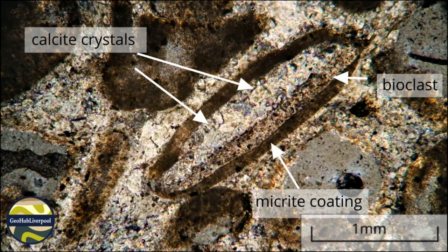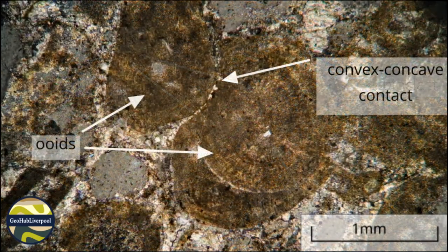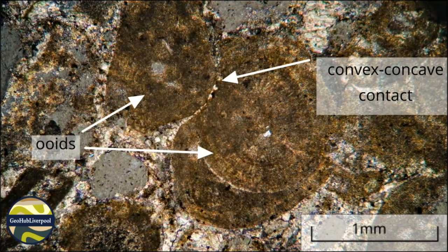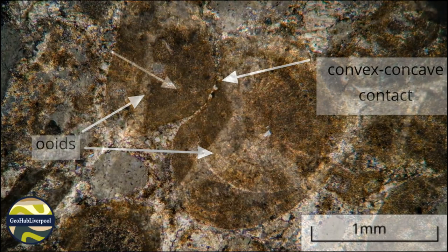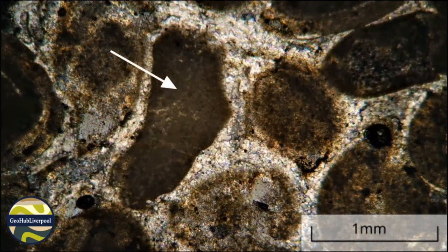These concave-convex contacts provide evidence that the ooids were compacted before they were cemented together. Some of the more irregular shaped masses of micrite show no internal structures and they may represent ripped-up fragments of carbonate mud.